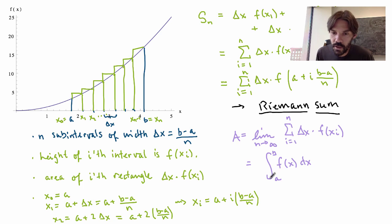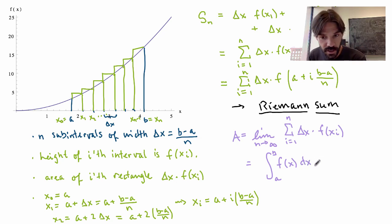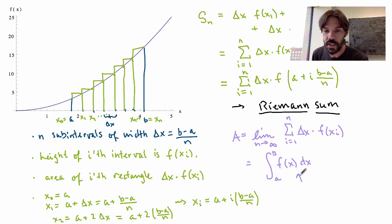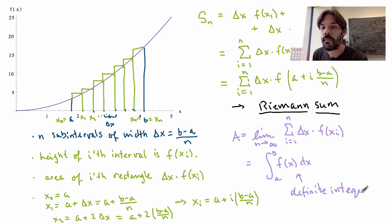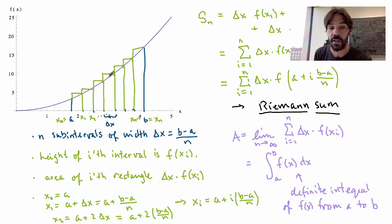This precise expression has its own symbol: the integral sign, which is an elongated S. We write the definite integral of f(x) from a to b. Here f(x) is the value of our function, and dx replaces delta x to indicate that the width is now truly infinitesimal. This whole symbol denotes the definite integral of the function f(x) from a to b, and geometrically it gives the precise area under the graph of f(x) from a to b.